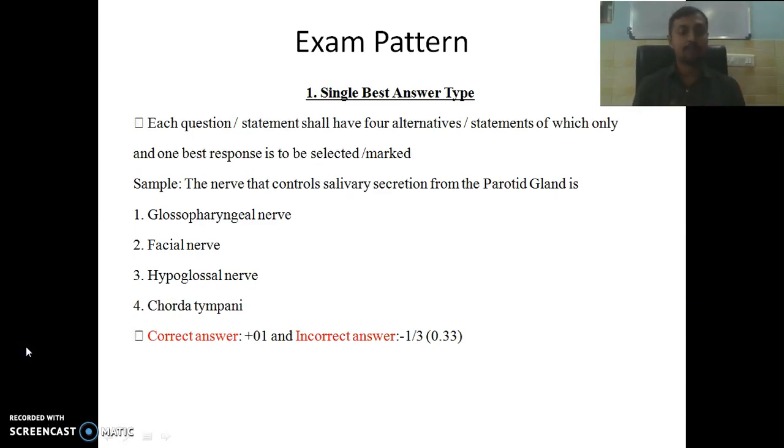Now we see the different questions they are asking, around seven types of question patterns are there. The first is the single best answer type. Everybody knows that one question will be there with four options, and you have to select one. For correct answer you will get one mark, for incorrect answer you will lose around 0.33 marks.